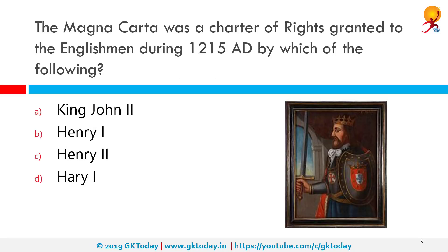The Magna Carta was a charter of rights granted to Englishmen during 1215 AD by which of the following? The correct answer is King John. Magna Carta is a Latin phrase which in English means Great Charter. It is the most important document of England, signed on 15 June 1215 at Runnymede alongside the River Thames in the English county of Surrey. It originated as a peace treaty between King John and a group of rebellious barons within his kingdom.